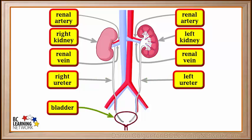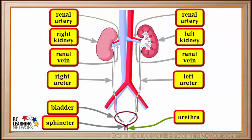The bladder is a hollow organ with muscular walls that stores urine coming from the ureters. At the bottom of the bladder there is a valve or sphincter, which can open to let urine out. The tube leading out of the bladder is called the urethra. Urine runs through the urethra when the sphincter and a lower one called the external sphincter are both open.